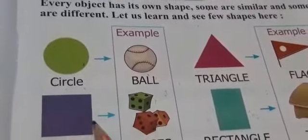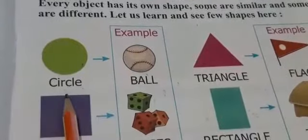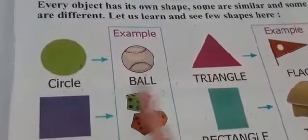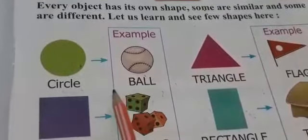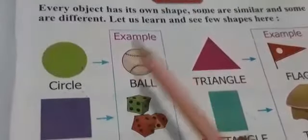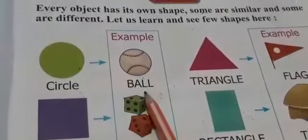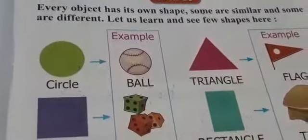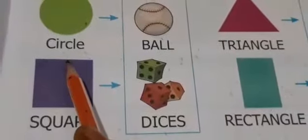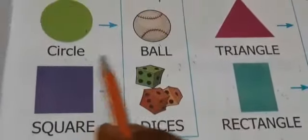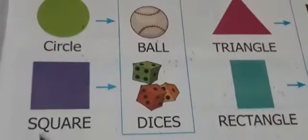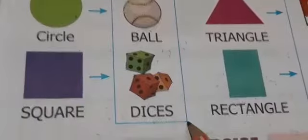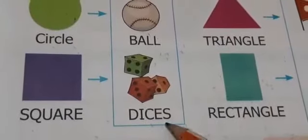Circle — C-I-R-C-L-E — circle. Circle means गोल आकार होता है. Circle में ball आता है — B-A-L-L, ball — circle में ball आता है. Square — S-Q-U-A-R-E — square. Square में dices आता है — D-I-C-E-S, dices.